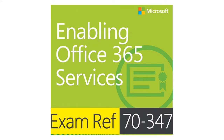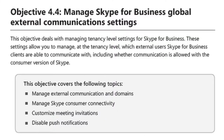Enabling Office 365 Services, Exam Reference 70-347, Objective 4.4: Manage a Skype for Business global external communication settings. This objective deals with managing tenancy level settings for Skype for Business. These settings allow you to manage, at the tenancy level, which external users Skype for Business clients are able to communicate with, including whether communication is allowed with the consumer version of Skype.